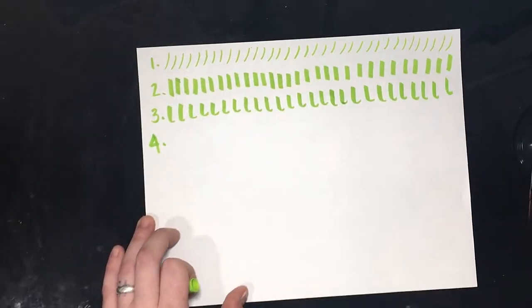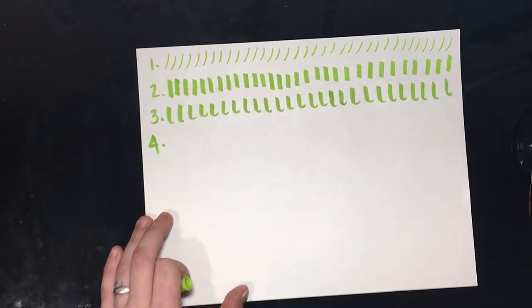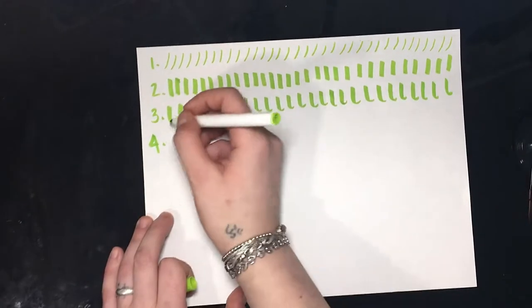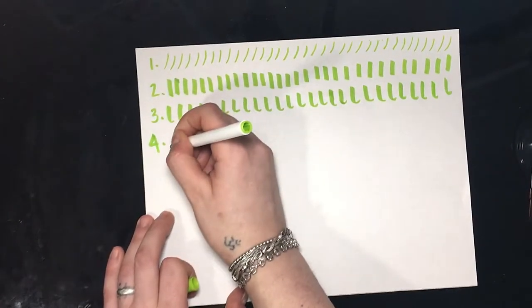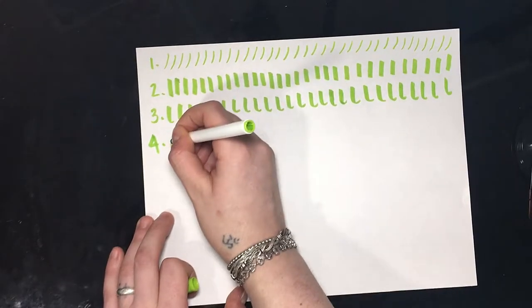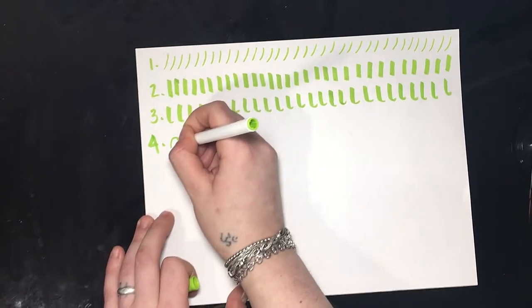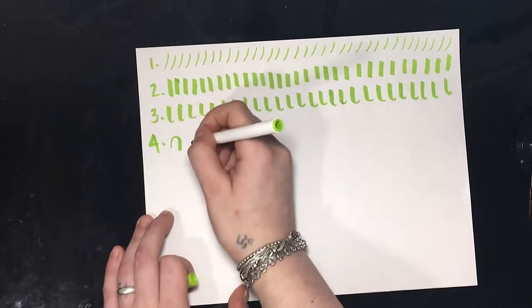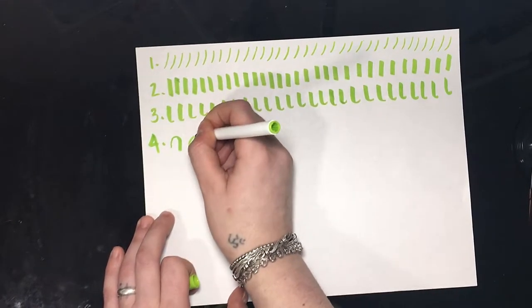Now another thing you can do is to make sort of like an N shape. But first, the first stroke you do is going to be a thin stroke and then when you come down that's going to be your thick stroke. Then you just make a line of those.